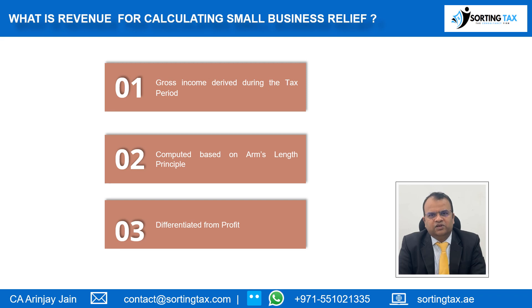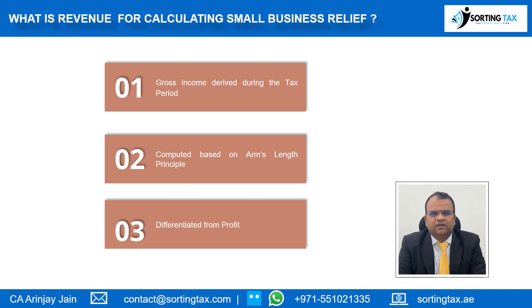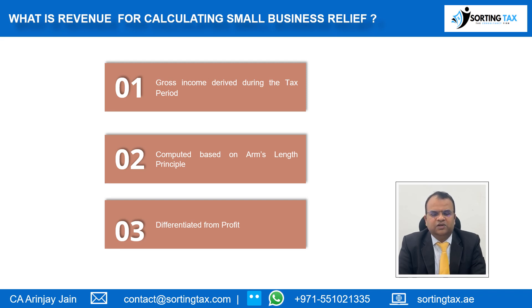The second important aspect is that the revenue has to be evaluated based on arm's length principles. What that means is that if a company has a transaction with a related party or a connected person — and all these are covered as part of our detailed course — those transactions have to be stated as if they were between unrelated parties. In other words, the revenue that you get should not be understated, and expenses should not be overstated.